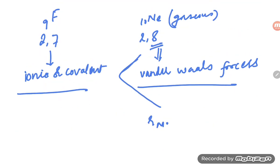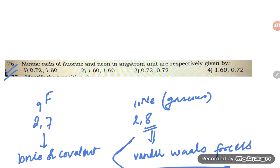Option number one is the correct option because neon is more at 1.60 angstrom and fluorine is 0.72 angstrom.